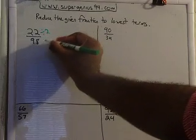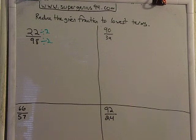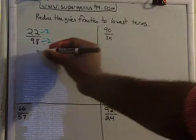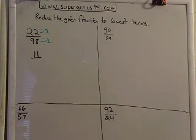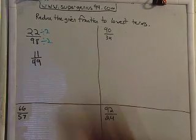So, 22 divided by 2, 98 divided by 2. So what is 22 divided by 2? That's 11. And 98 divided by 2, that is 49.